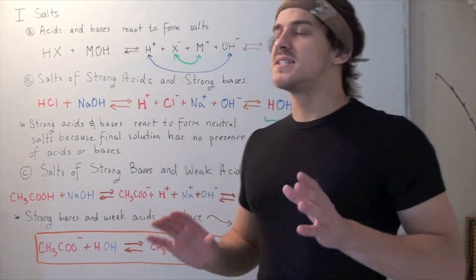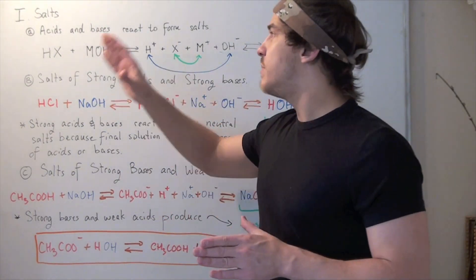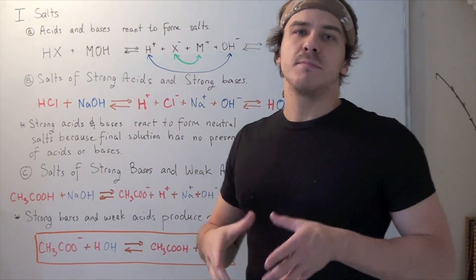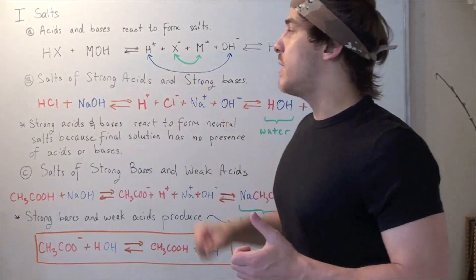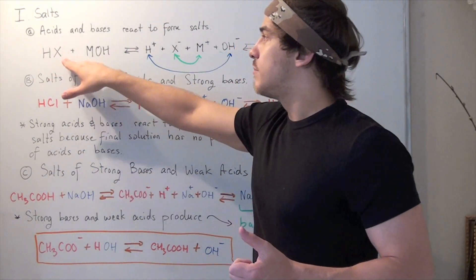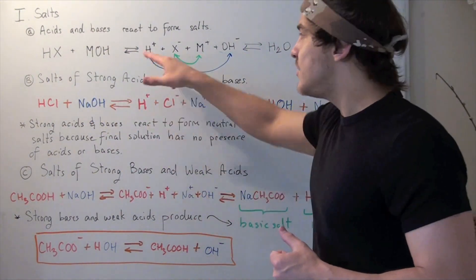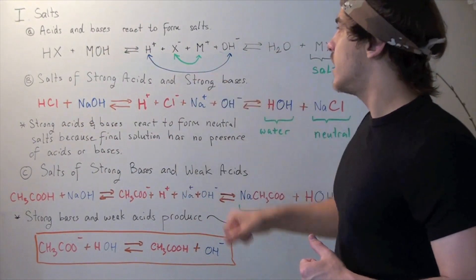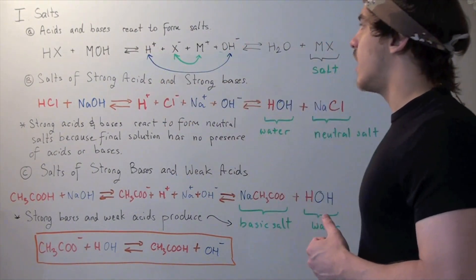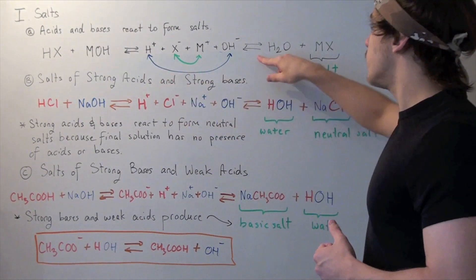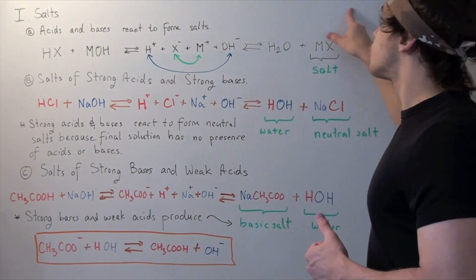In this lecture, we're going to look at something called salts. Salts are formed whenever acids and bases react. For example, in a hypothetical reaction of a hypothetical acid and base, we have HX plus MOH. These dissociate to form the H ion, X ion, M ion, and hydroxide ion. The H+ ion and the hydroxide ion react to form water, and the X ion and the M ion react to form our salt.